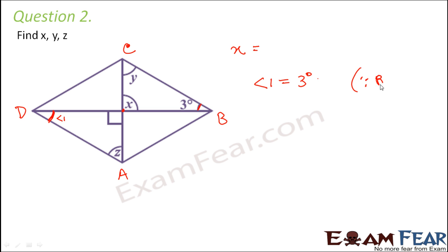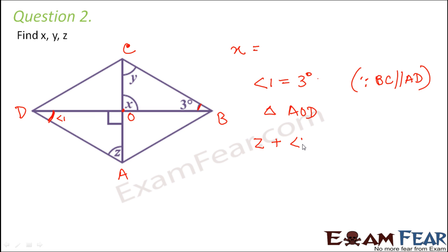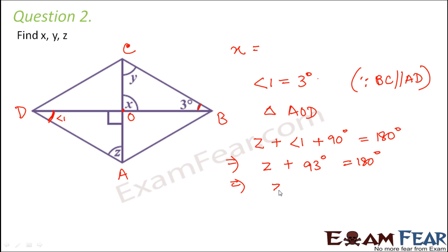Since BC is parallel to AD, opposite sides are parallel in a parallelogram, so these are alternate angles — this angle will also be 30 degrees. Now in triangle AOD, where this point is O, the sum of the three angles equals 180 degrees: angle z plus angle 1 plus 90 degrees equals 180 degrees. Since angle 1 is 30 degrees, 30 plus 90 is 93 degrees, therefore z equals 180 minus 93, which is 87 degrees.